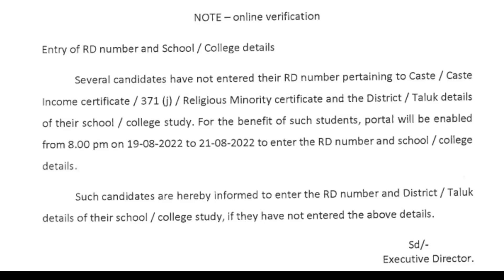First thing regarding RD numbers: for income, caste, and 371 certificates, if several students have not entered their RD numbers pertaining to caste, income, 371, religious minority, and the district details of the school or college, these RD-number-related mistakes can be corrected. The correction portal will open from 8pm on 19th August and will be open till 21st August — spelling mistakes, school district mistakes, all can be corrected.